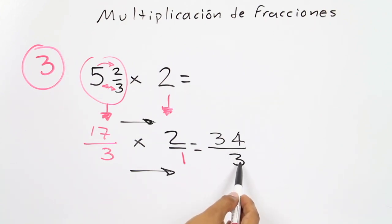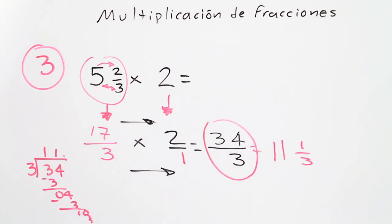We cannot simplify the fraction because 3 is only divided by 3 and 1, and 34 cannot be divided by 3. However, we can get a mixed fraction because the numerator is greater than the denominator. The final answer of the multiplication is 34 over 3, or 11 and 1 third.